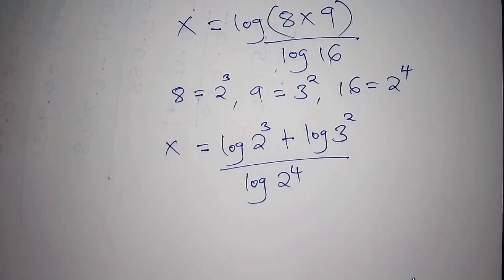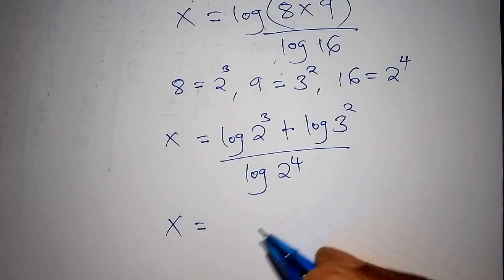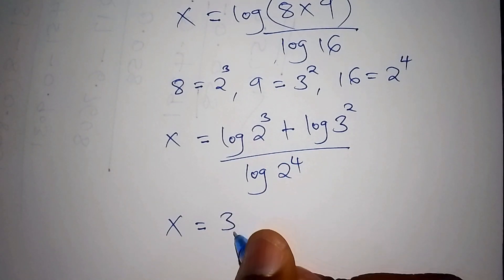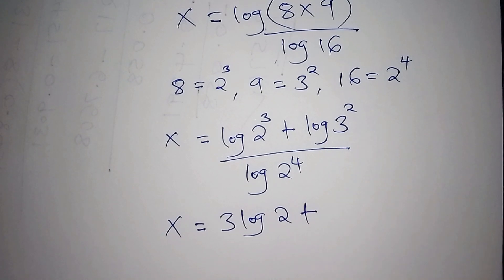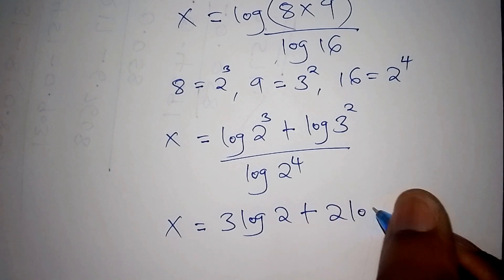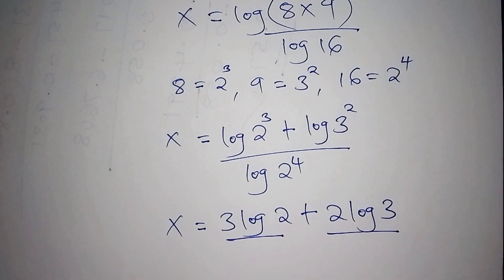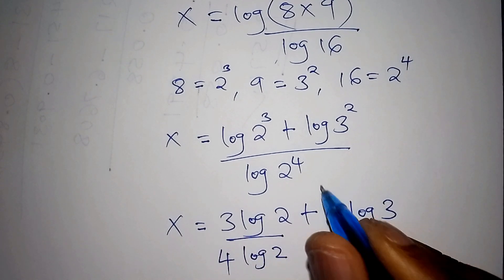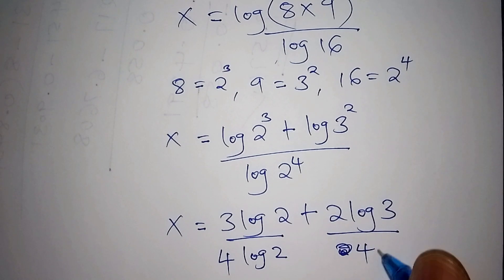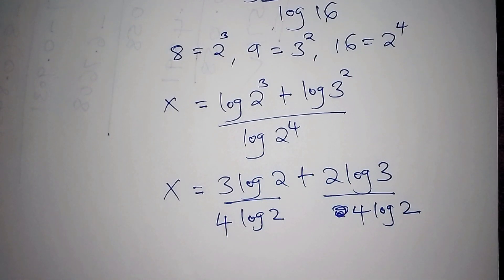Applying the power rule to each term: log of 2 to the power of 3 becomes 3·log 2, and log of 3 to the power of 2 becomes 2·log 3. The denominator, log of 2 to the power of 4, becomes 4·log 2. We divide each term in the numerator independently by 4·log 2.